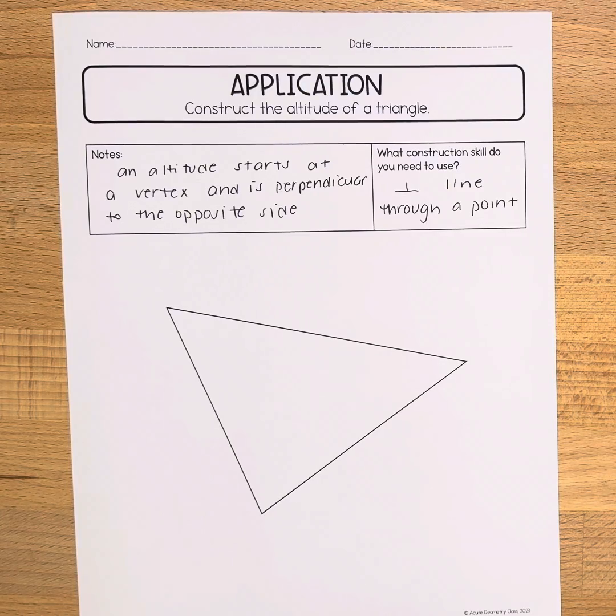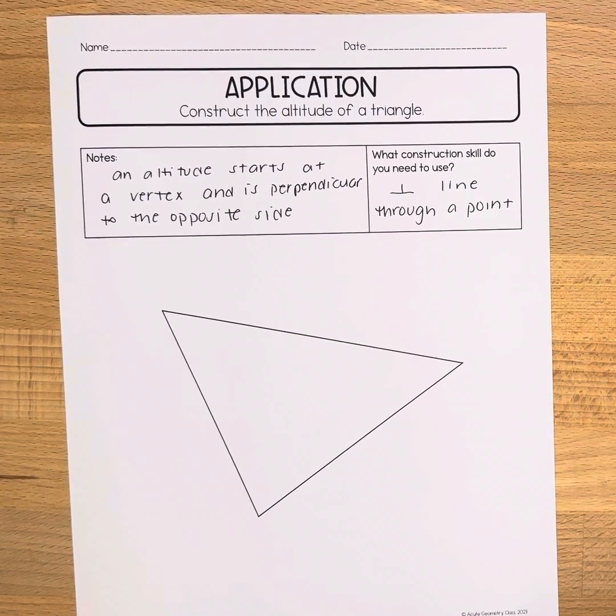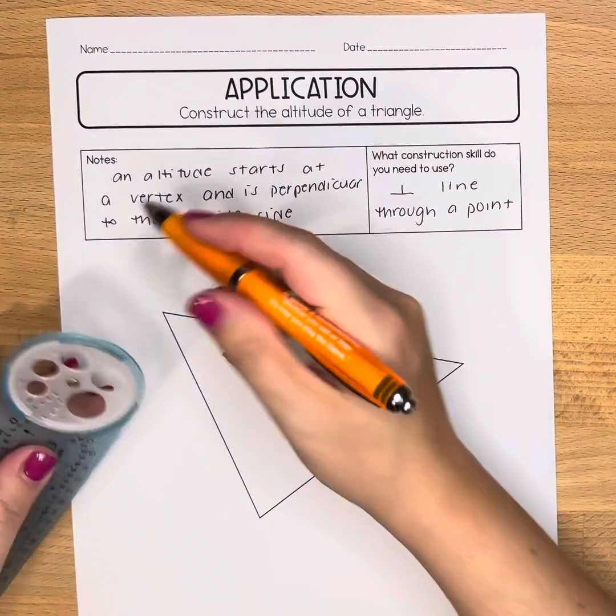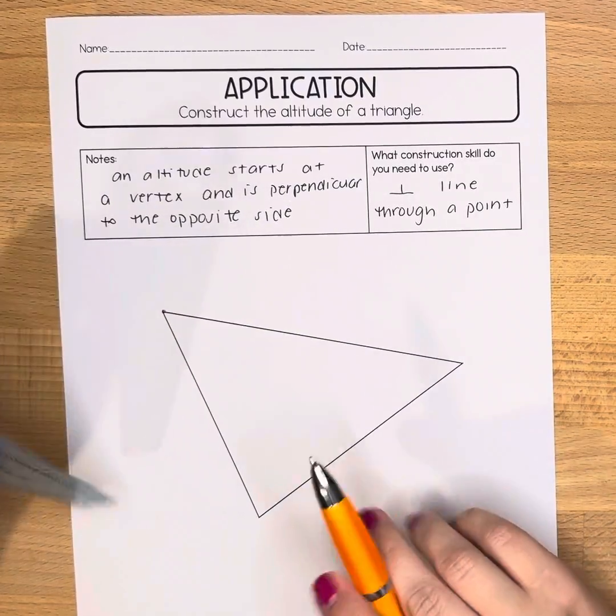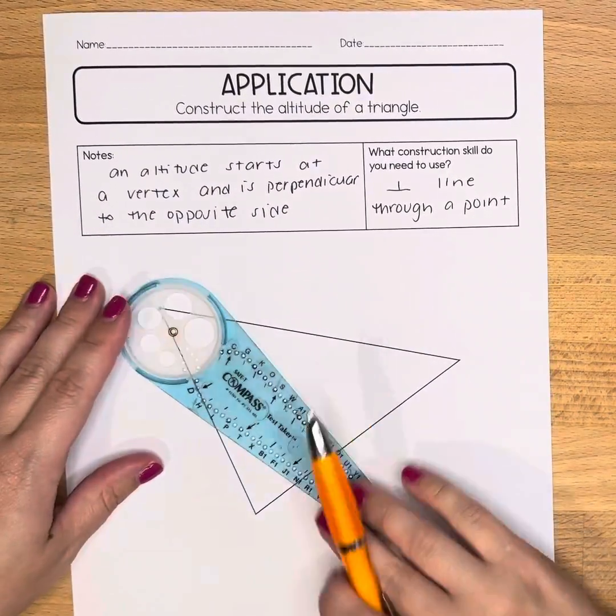When we look at our triangle here there are three vertices and you could pick any vertex to use. I'm just going to choose this one over here. I'm going to start by bolding this point and I'm going to be completing the steps for the perpendicular line through a point off the line construction.